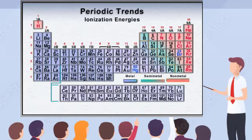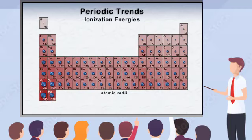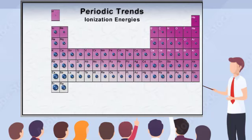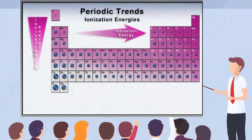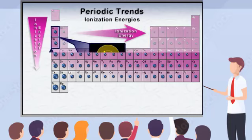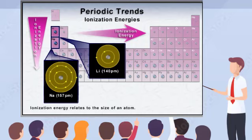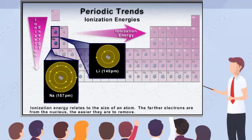So how do ionization energies relate to the periodic table? They actually show the opposite trend as atomic radii. Ionization energies decrease as you move down each group, and they increase moving left to right across a period. The size of the atoms increases as you move down a group, so the outermost electrons are farther from the nucleus. An electron that is farther from the nucleus is affected less by the nucleus's positive charge, so it is easier to remove. Therefore, the ionization energy decreases.